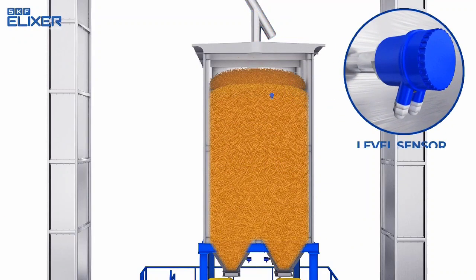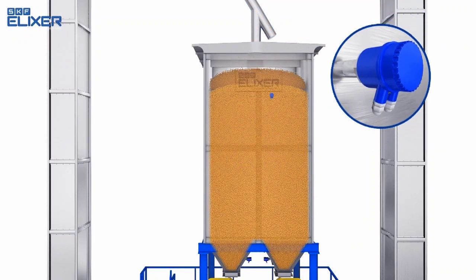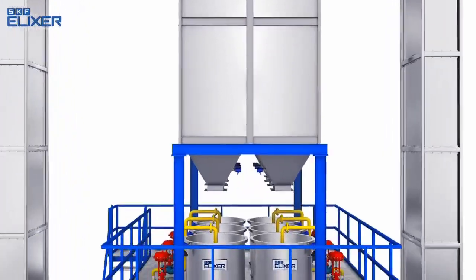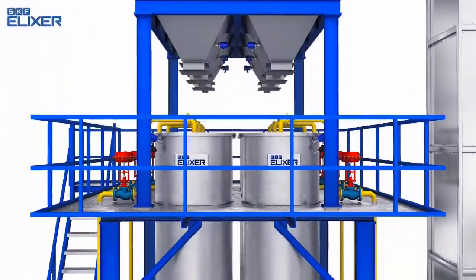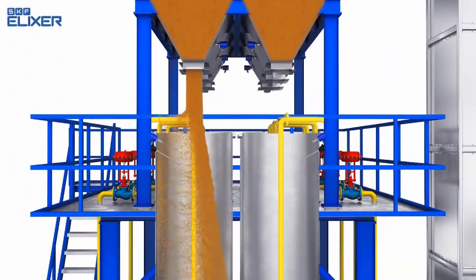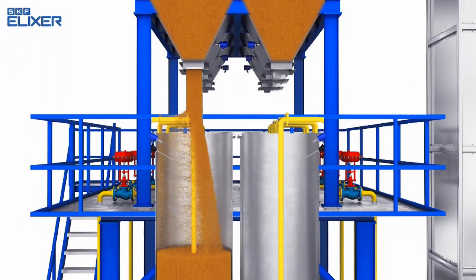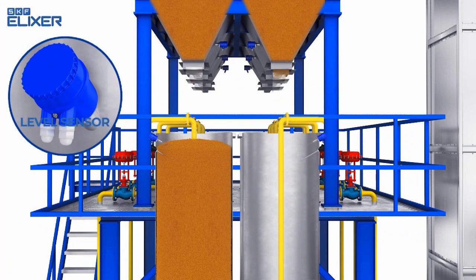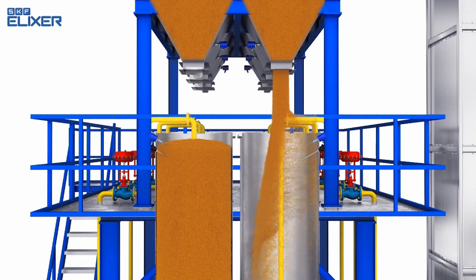In auto mode, paddy is discharged from the buffer bin to the steaming tanks in sequence — one tank after the other. When the paddy reaches the high level sensors in the steaming tank, a signal is sent to close the pneumatic slide gate of the hopper.